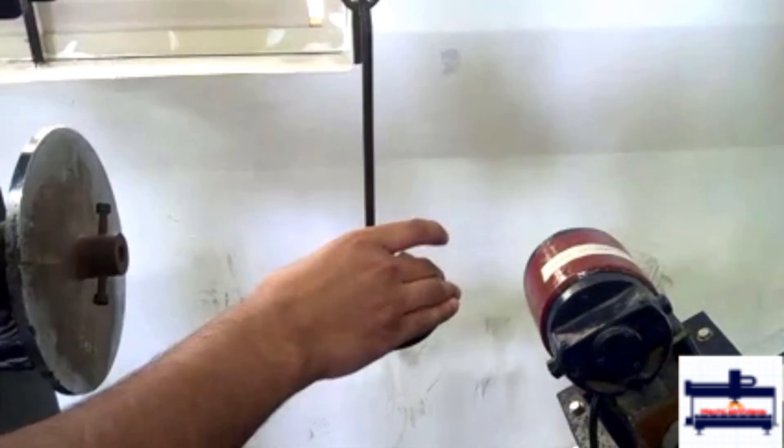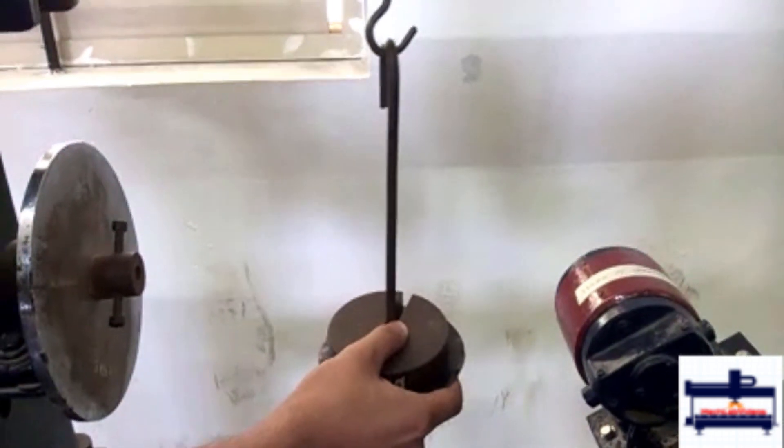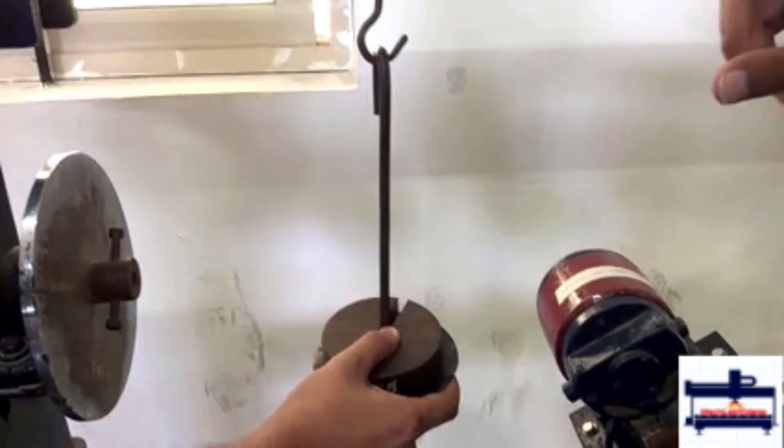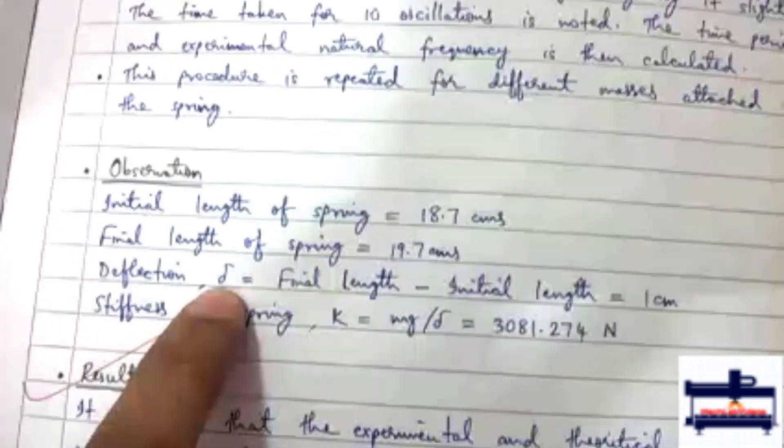We pull the load down, and after putting the load, we find the final length of the spring. Final length minus initial length gives us the deflection value for that particular load.